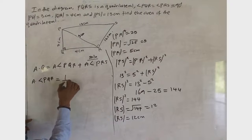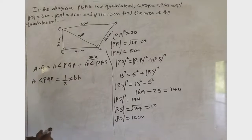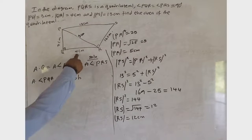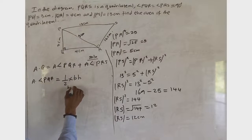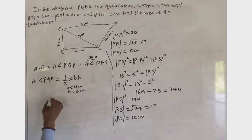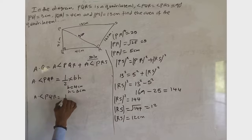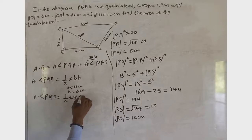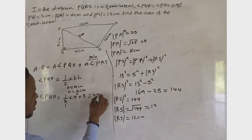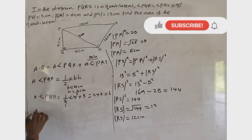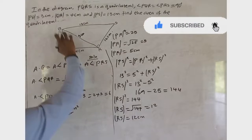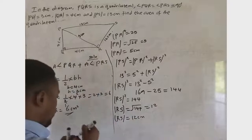For triangle PQR, this is a right triangle. The base is 4 cm and the height is 3 cm. So area of PQR = ½ × 4 × 3. That gives us ½ × 12 = 6. Therefore the area of triangle PQR is 6 cm².